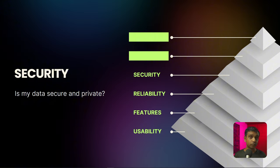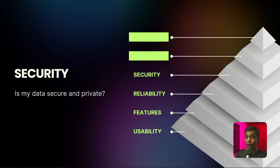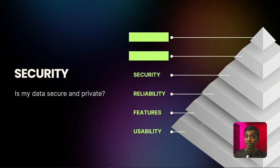People knew we were using telecom carriers before that, and we knew that traffic could easily be routed through the government. Then WhatsApp came and said they were end-to-end encrypted. A lot of people said: it has everything the other app has, but it also has security — and that's why they switched.